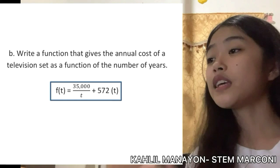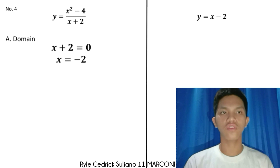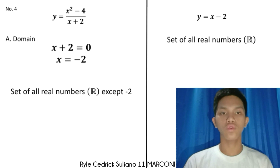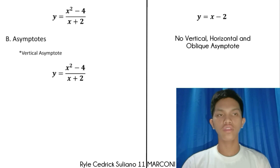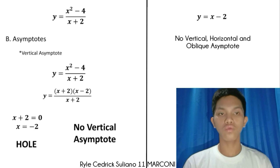Now we compare and contrast the two functions. For the domain: equate the denominator to zero. For the first function, x equals negative 2, so the domain is all real numbers except negative 2. For the second function, the domain is all real numbers. For asymptotes, the second function has no vertical, horizontal, or oblique asymptotes, so we focus on the first function. After reducing to lowest terms, we find a common factor, making a hole at x equals negative 2, and this function has no vertical asymptote.